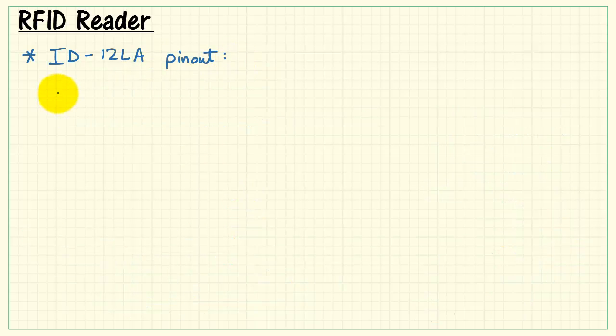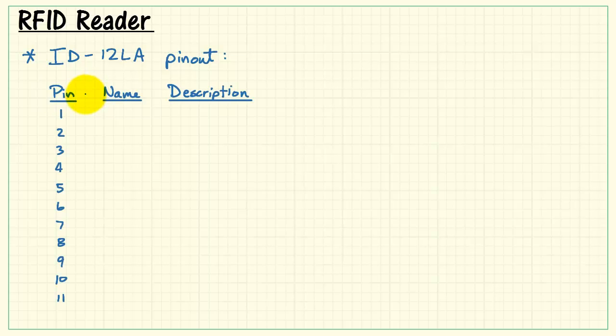All right, to wrap things up, let's take a look at the signal description for the ID12LA reader. It has 11 pins total. Here's the power supply connections, pins 1 and 11. VDD can be anywhere from 2.8 up to 5.0 volts.